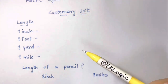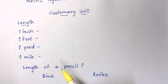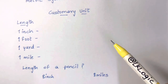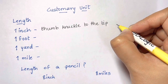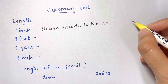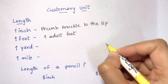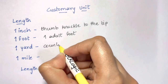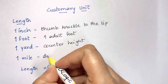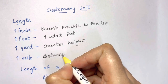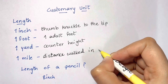Let's estimate the units to easily understand what one inch, one foot, one yard, and one mile is. From the thumb knuckle to the tip of the thumb can be estimated as one inch. One foot is like one adult foot. One yard is counter height. One mile can be estimated as the distance walked in 20 minutes.